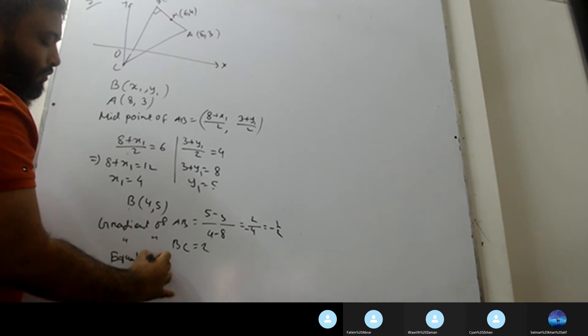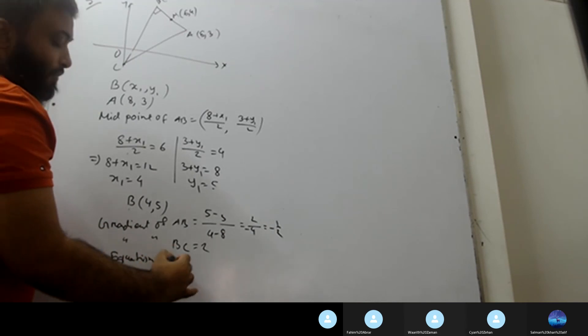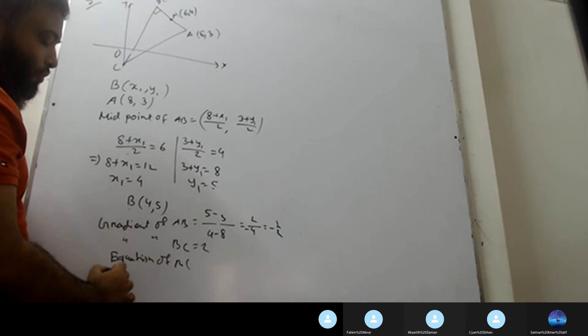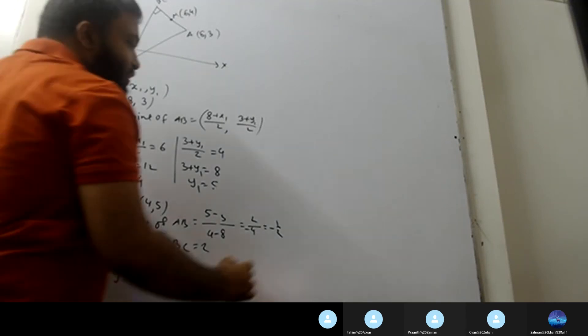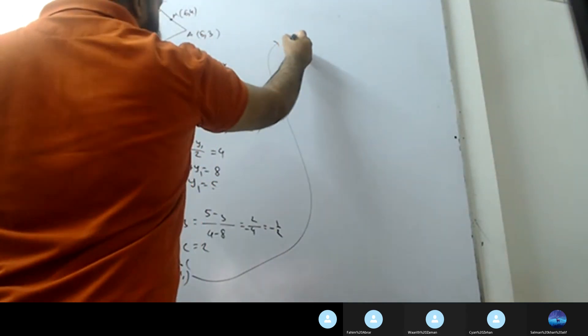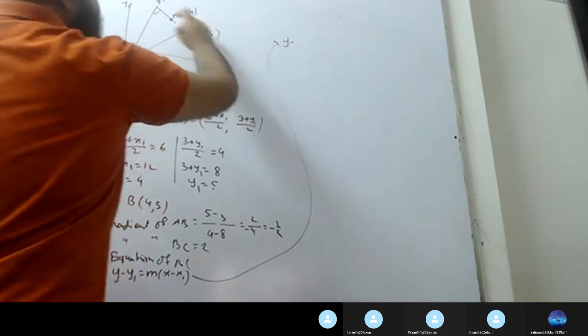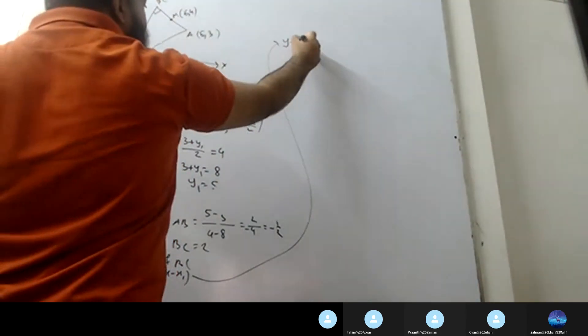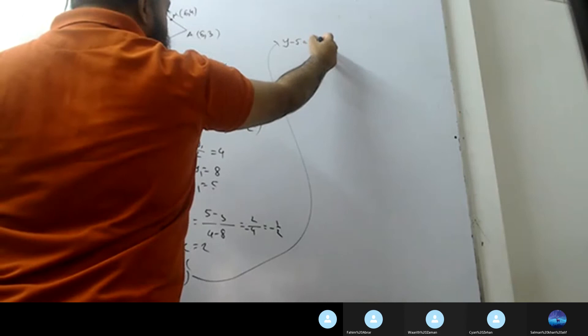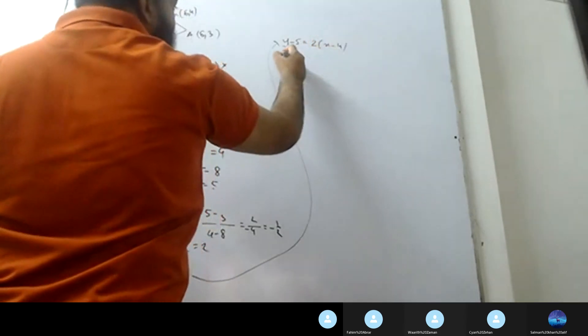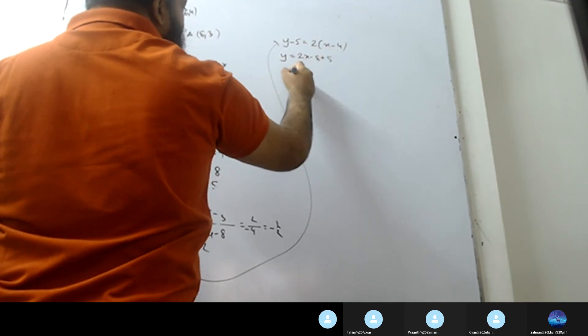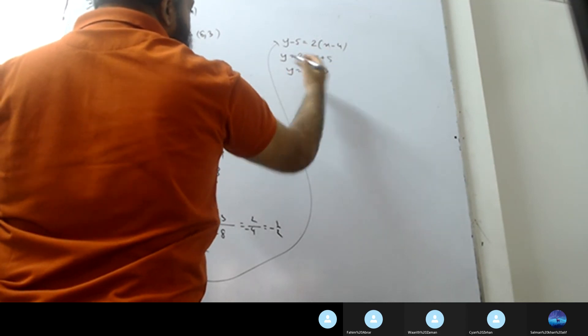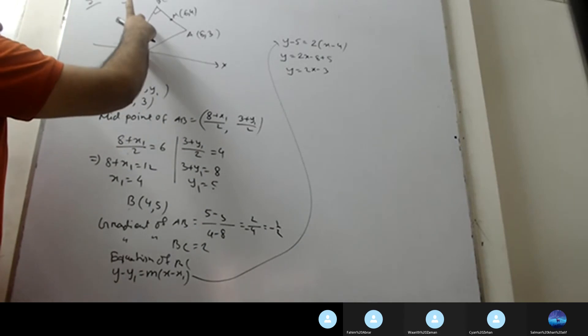Equation of BC follows the formula: y minus y1 equals m times x minus x1. Taking coordinate B, so y minus 5 equals 2 times x minus 4. So y equals 2x minus 8 plus 5. Y equals 2x minus 3. This is the line equation.